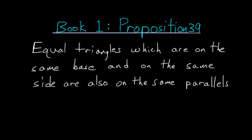For Book 1, proposition number 39 of Euclid's Elements: equal triangles which are on the same base and on the same side are also on the same parallels.